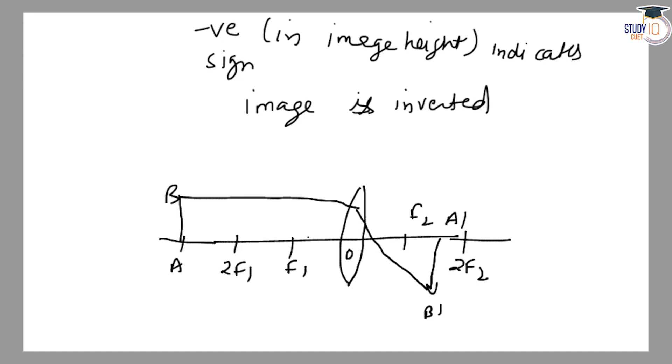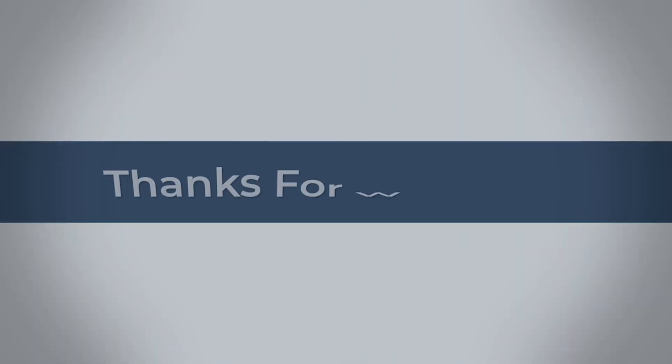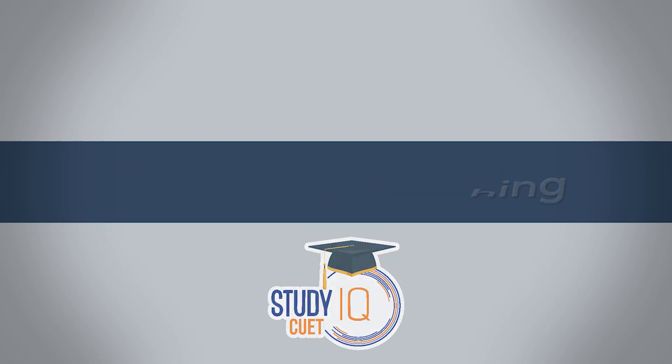The rays intersect at this point. This is the ray diagram. The distance here in the opposite direction is 16.66 cm, and the height is 3.33 cm, while the object height is 5 cm. The negative sign means the image is inverted. Thank you for watching.